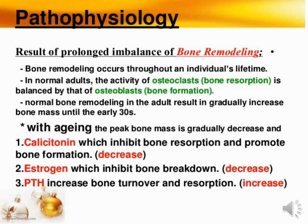After these changes, a person may develop osteoporosis. Basically, four things are important steps in osteoporosis: first is the bone remodeling condition, then calcitonin is altered, then estrogen is altered, and lastly PTH hormone is a very responsible factor leading to the condition of osteoporosis. This is the pathophysiology of osteoporosis.